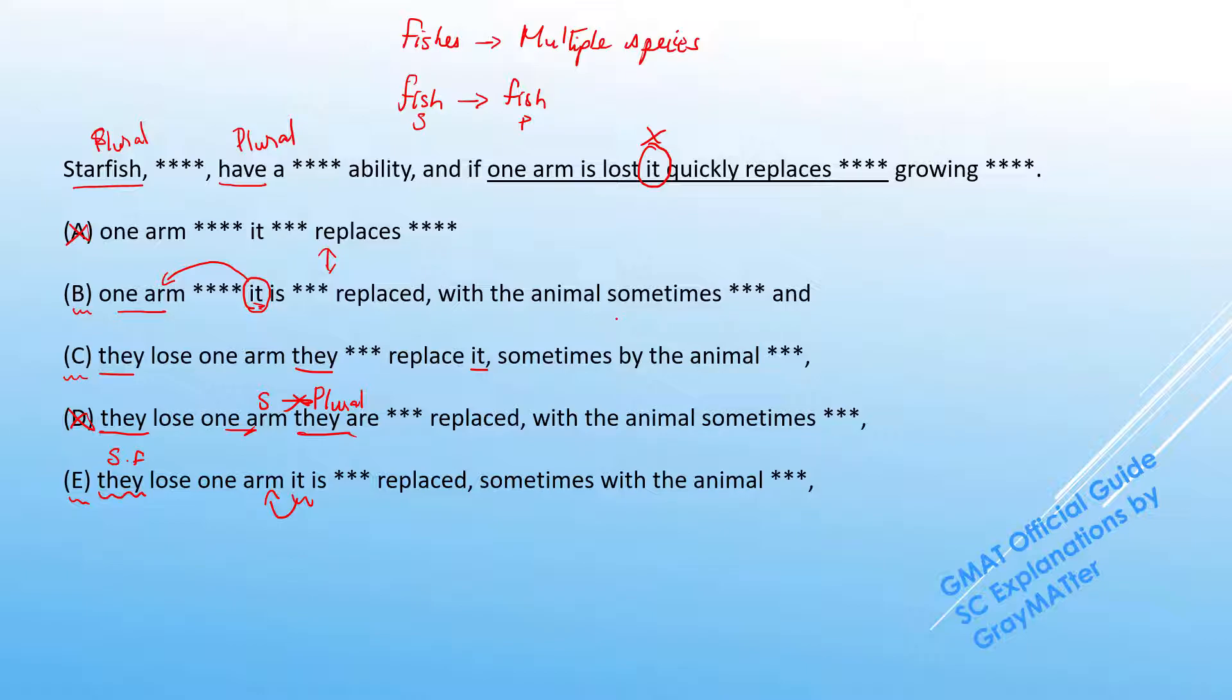Now a vertical scan reveals that in B, we have this conjunction separating this overcompensating and growing, whereas in C and E, we don't have that conjunction, we rather have a comma. So let's understand these differences.